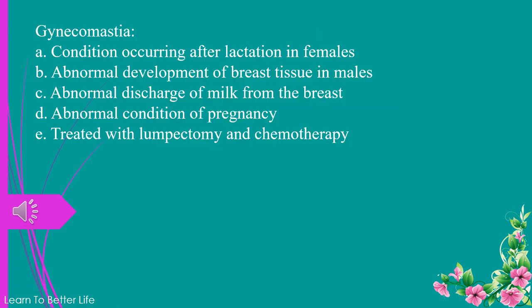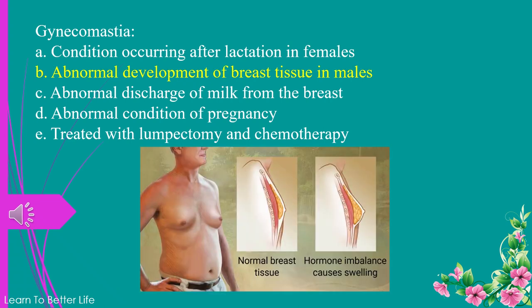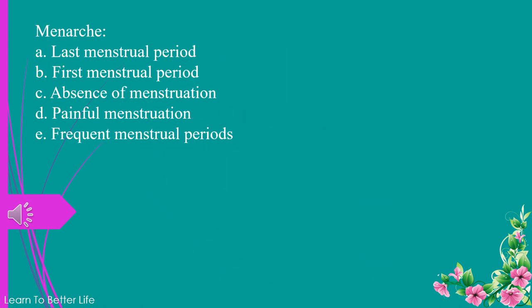Gynecomastia. a. condition occurring after lactation in females. b. abnormal development of breast tissue in males. c. abnormal discharge of milk from the breast. d. abnormal condition of pregnancy. e. treated with lumpectomy and chemotherapy. The answer is b. abnormal development of breast tissue in males.